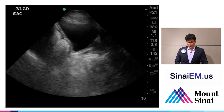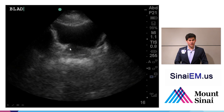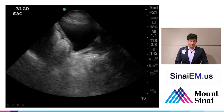In a transverse view of the bladder, it takes on a trapezoidal or square shape depending on how full it is. Behind it, we'll see the vaginal cuff, uterus, or prostate depending on the patient's sex. In a sagittal orientation, we see a more triangular-shaped bladder with bowel above and behind it. Occasionally, like in this patient, you can see a bit of prostate, or in a female, the uterus coming up behind the bladder.